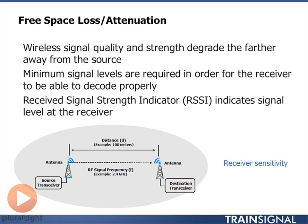Whatever device has the weakest receiver sensitivity is what you should be using for planning your network, because when they can't recover the signal, that defines the edge of your cell.